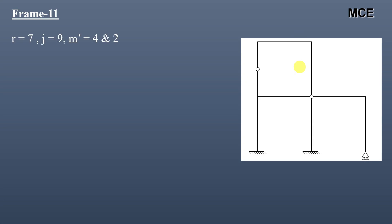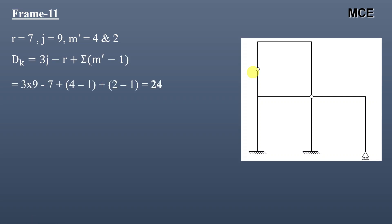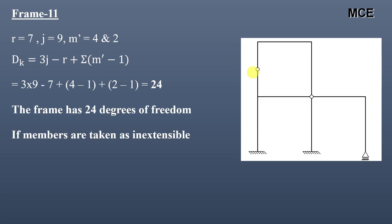For frame 11, this frame has 7 reactions, 9 joints, and 2 internal hinges. For the first internal hinge, the number of members meeting is 4, and for the second, it is 2, so m′ = 4 and 2. The value of DK is equal to 24, meaning this frame has 24 degrees of freedom. If members are taken as inextensible, this frame contains 9 inextensible members, so DK = 24 − 9 = 15.